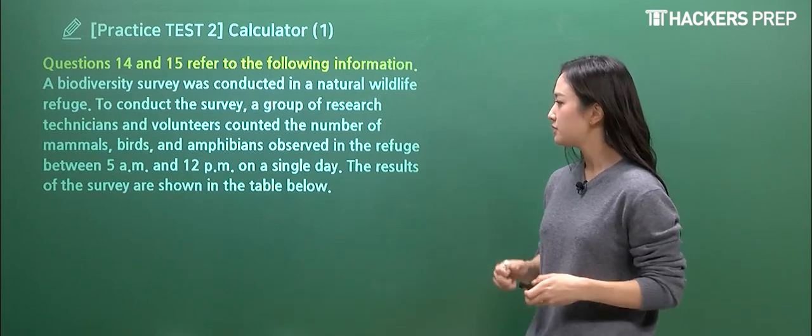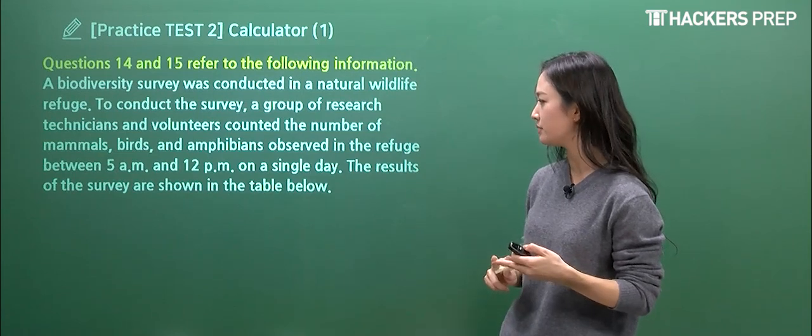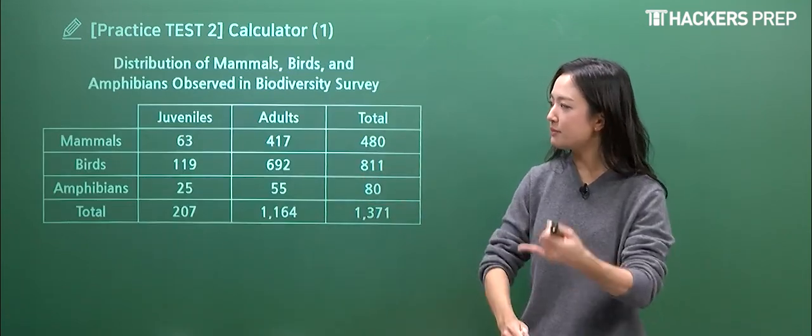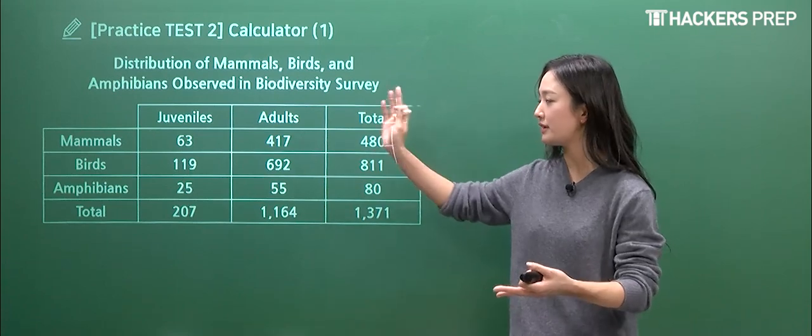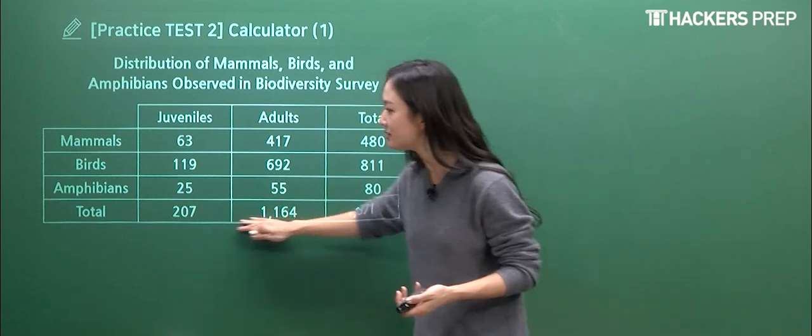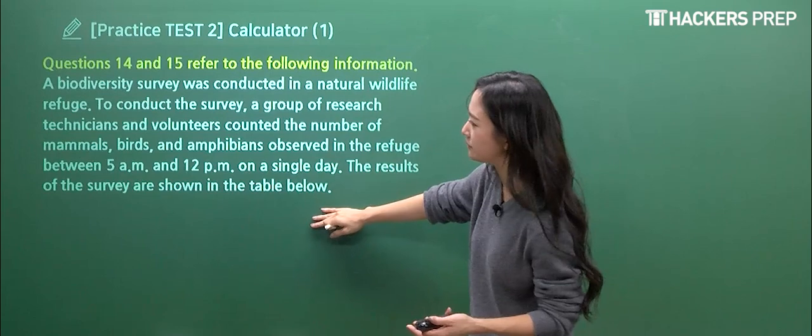So moving on to the next set. So we can see that we have two questions referring to this common information, but the results are going to be simplified here. So we have mammals, birds, amphibians, juveniles, adults, and the young ones and the older ones, the total for each category and the net sum presented here. That makes sense. So you don't have to really read through this information.